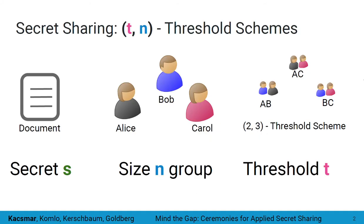At a high level, when talking about secret sharing, we're going to have some secret S. This secret could be a document, a short message, or something like a key or password. This secret belongs, so to speak, to a group of N participants. Here we have N equals 3 participants with Alice, Bob, and Carol. The nature of the document requires that some subset of them must be in agreement about accessing the secret.